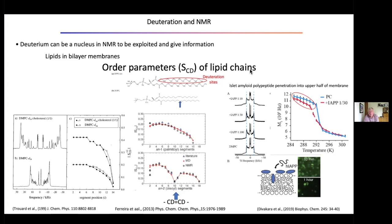What about proteins interacting with bilayers? Here is an amyloid polypeptide looking at penetration into the upper half of the membrane. As more and more peptide is added, the order profile changes more dramatically in the upper half of the bilayer than in the lower half. We've done this for toxins and a number of membrane-penetrating peptides — they typically penetrate to about halfway down the bilayer. This is an interesting and sensitive way of looking at the intercalation of peptides by deuterium NMR.